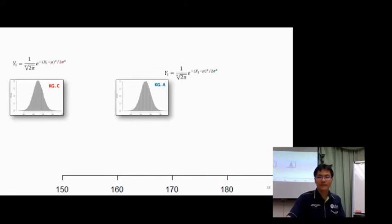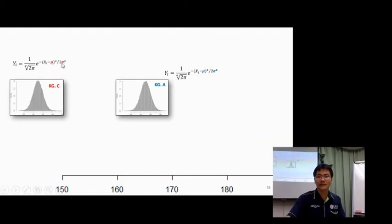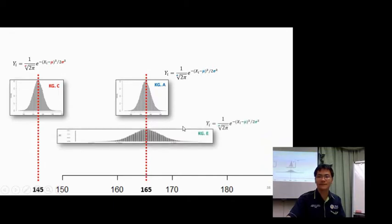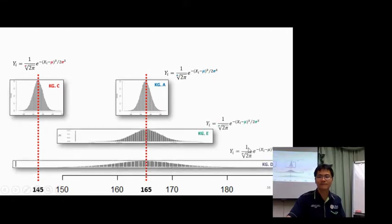Imagine this scenario: you have the distribution of body height for different locations, say location A and C. Each curve is defined by the same mathematical formula — the only difference is the mean and the variance. In one case, the mean is different; in another case, the means are the same but the standard deviation differs.